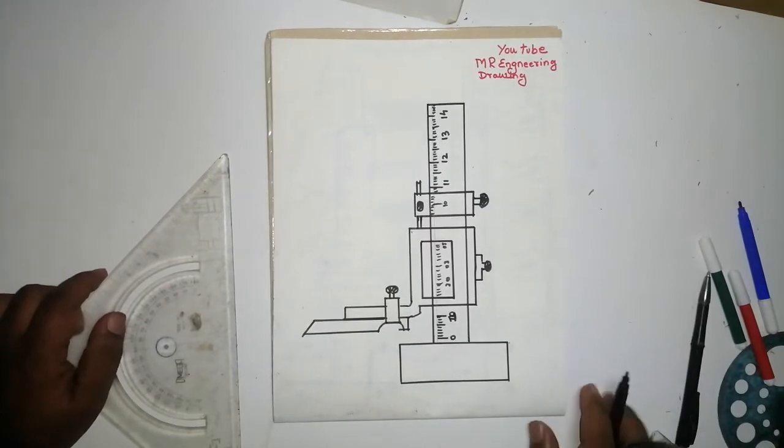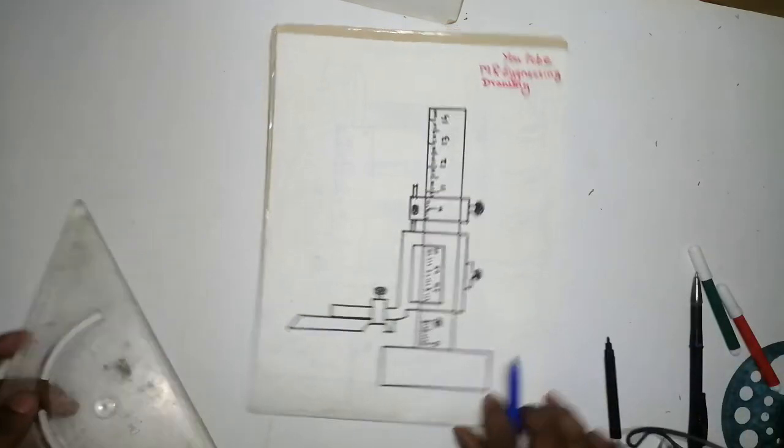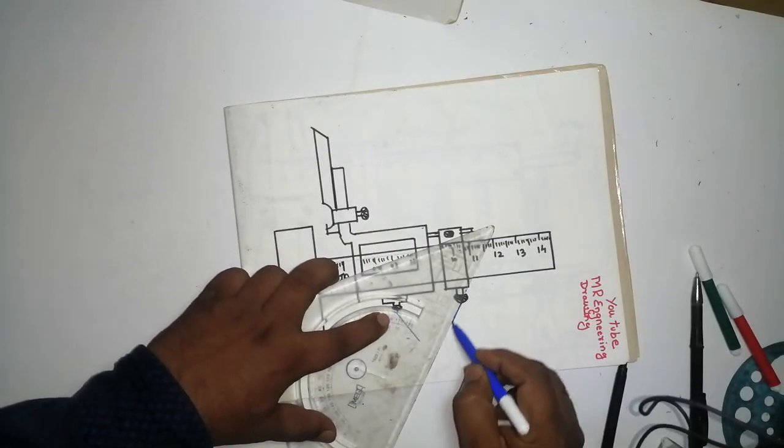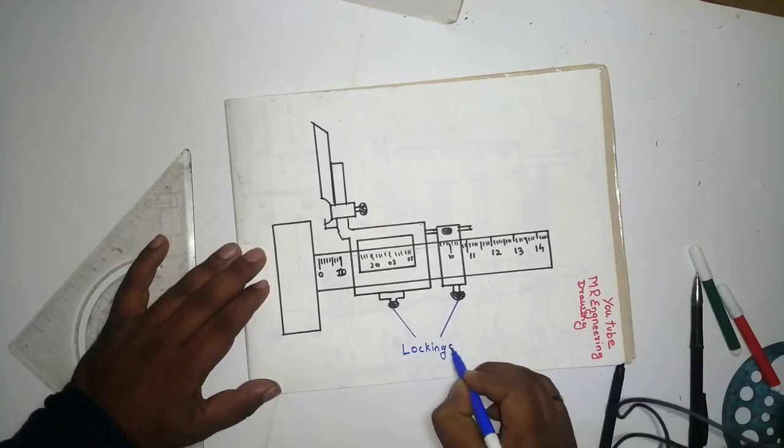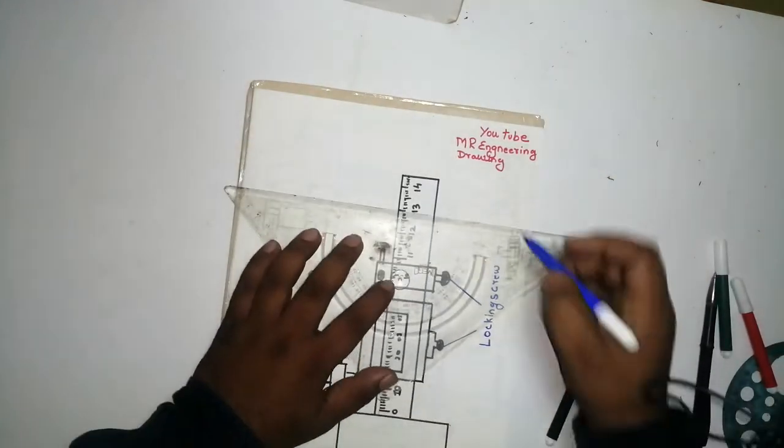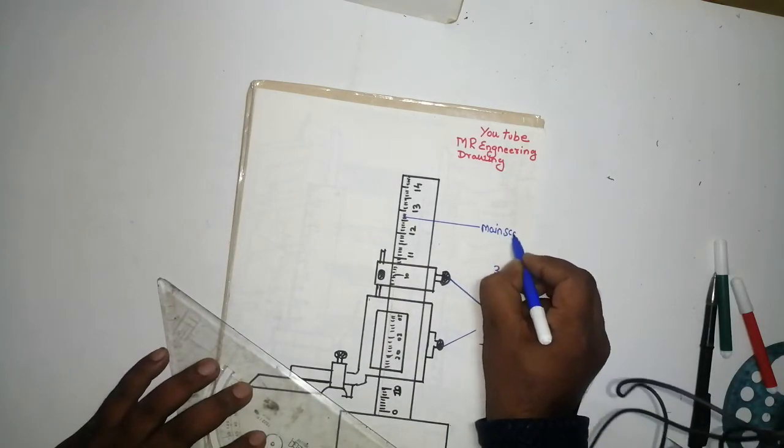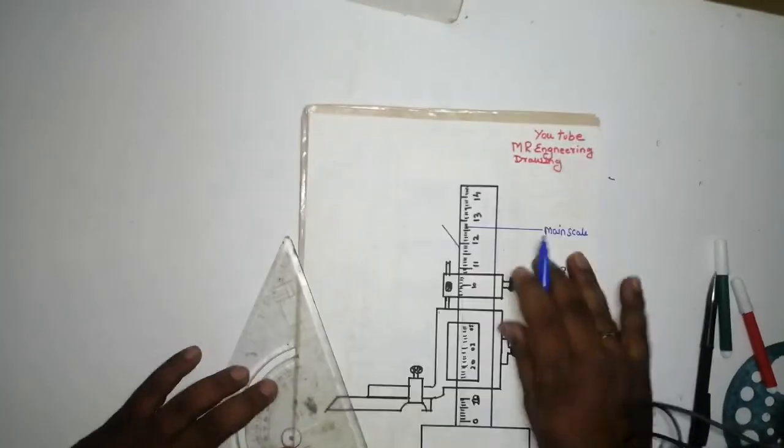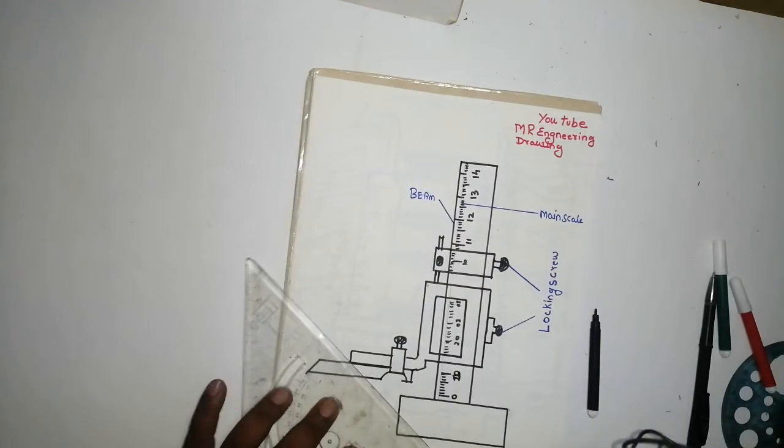This is locking screw. This is main scale. This is beam.